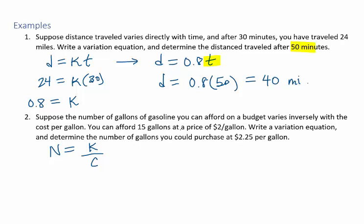You can afford 15 gallons at a price of $2 per gallon. So in this equation, n is 15 and c is 2. We solve this equation for k to get the constant of variation. Multiply both sides by 2 and we find that k is 30.